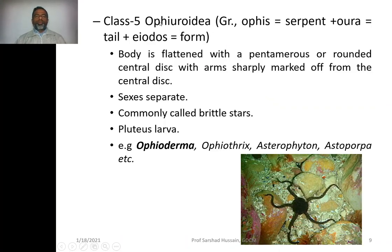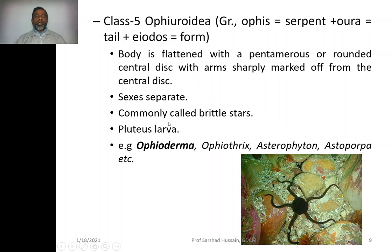Fifth class, Ophiuroidea. 'Ophios' means serpent and 'oeides' means form, because they have a serpent-like appearance. Body is flattened with a pentamerous rounded central disk. Arms are very sharply marked off from the central disk. Sexes are separate. Commonly called brittle stars. Pluteus larva is present. Examples include Ophioderma, Ophiothrix, Asterophyton, and Astroparbora.